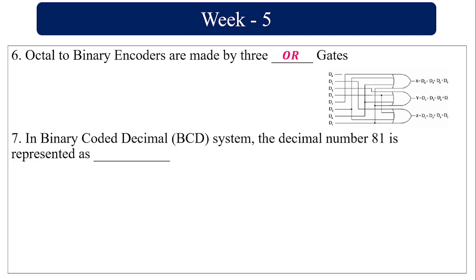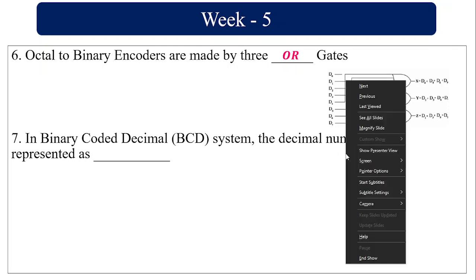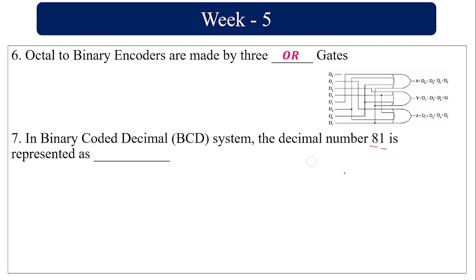In binary coded decimal (BCD) system, the decimal number 81 is represented as: in BCD, each and every digit is represented by its corresponding binary value. Here 8 is represented as 1000 and 1 is represented as 0001. So this is going to be the BCD value: 1000 0001.